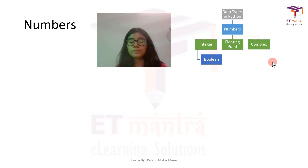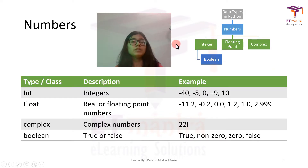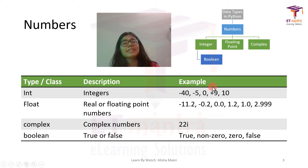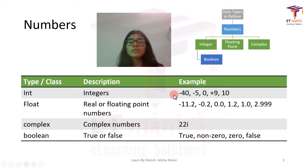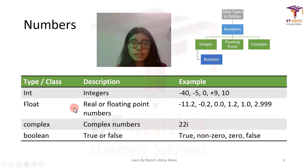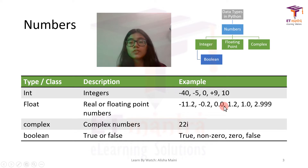Coming on to numbers — the types here are int, float, complex, and boolean. Int stands for integers, and as you can see there are examples of all kinds of integers. Then we have float: real or floating point numbers, which are basically numbers with a decimal point, like 11.2, 0.0, and so on.